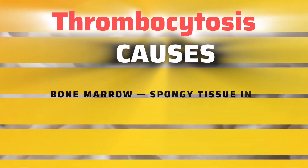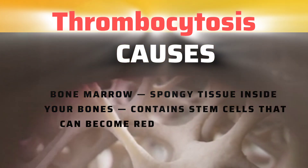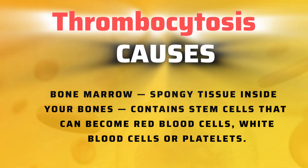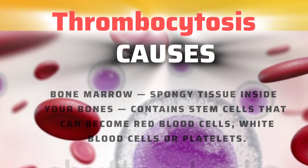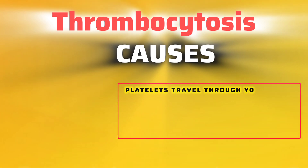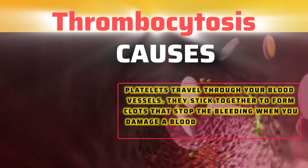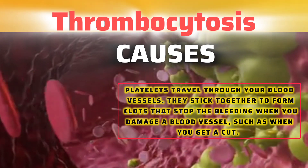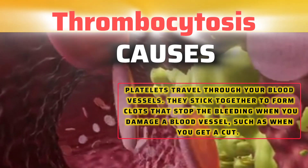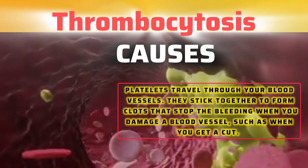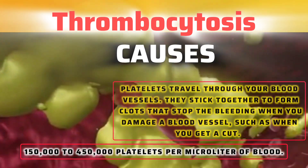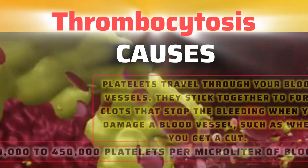Causes — Bone marrow: Spongy tissue inside your bones contains stem cells that can become red blood cells, white blood cells, or platelets. Platelets travel through your blood vessels and stick together to form clots that stop bleeding when you damage a blood vessel, such as when you get a cut. A normal platelet count ranges from 150,000 to 450,000 platelets per microliter of blood.